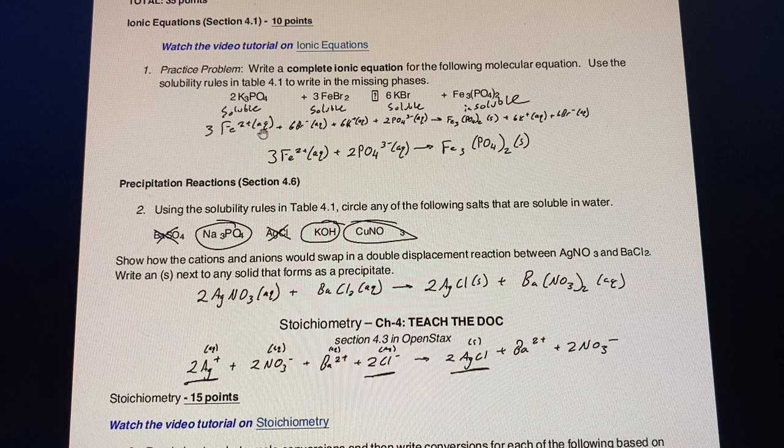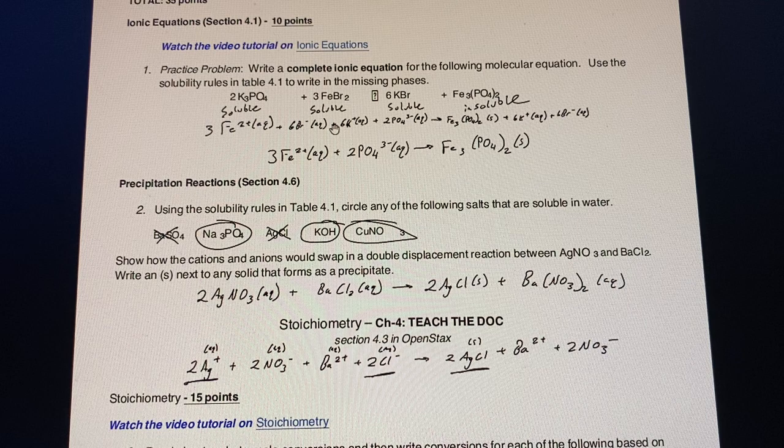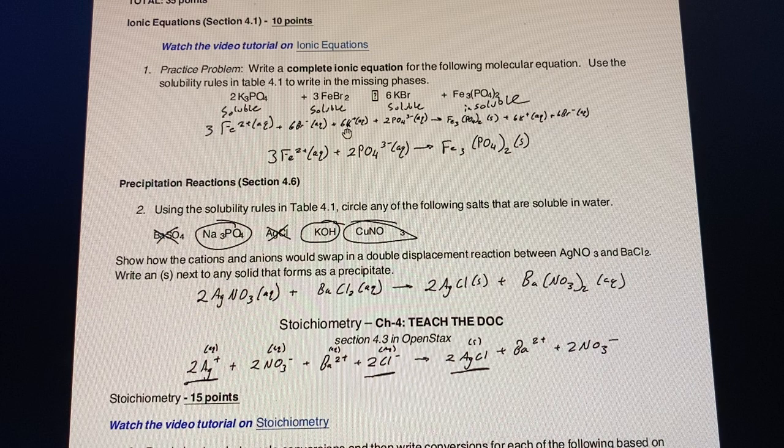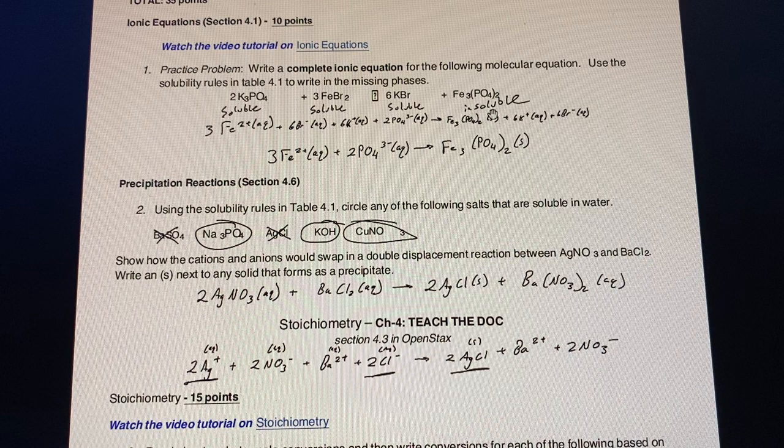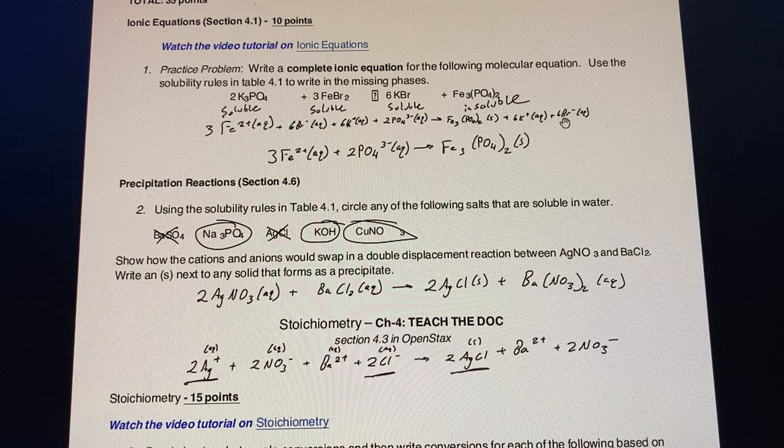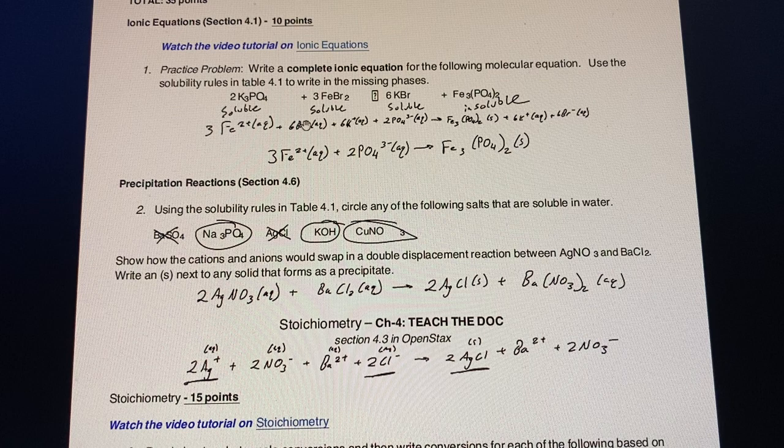We have the 3Fe2+ which is aqueous, the 6 bromine minus which is aqueous, as well as the 6K+ and the 2PO4 3-, and then we have this going to the Fe3(PO4)2 because that's insoluble so it doesn't change, the 6K+ which is aqueous, and the 6 bromine minus which is also aqueous.